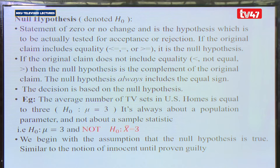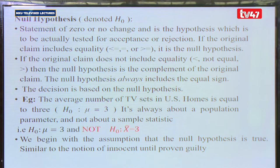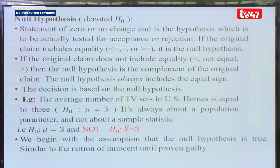When testing a hypothesis, we have the null hypothesis, denoted H₀, which is a statement of zero or no change. It is the hypothesis to be tested for acceptance or rejection. If the original claim includes 'less than or equal to' or 'greater than or equal to,' then it is usually the null hypothesis. If the original claim does not include those signs, then the null hypothesis is the complement of the original claim, and the null hypothesis always includes the equal sign.